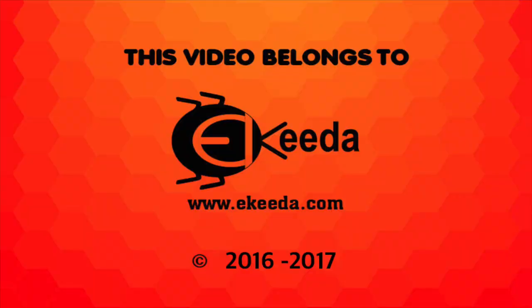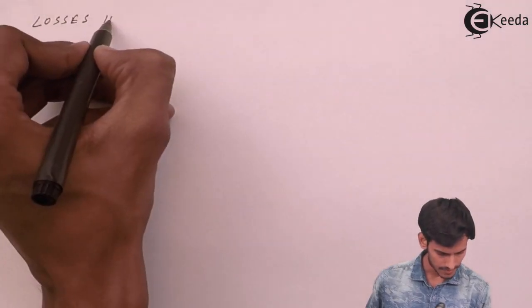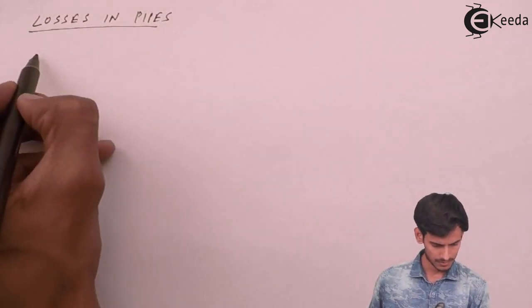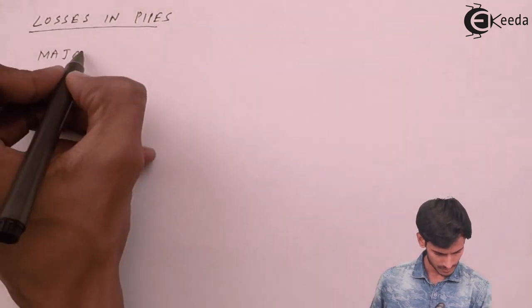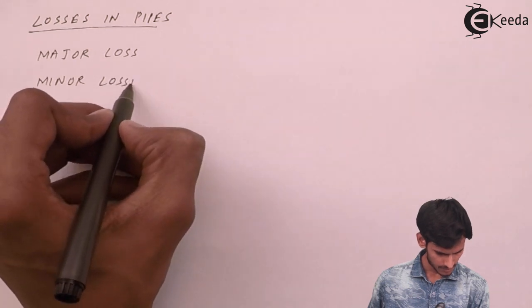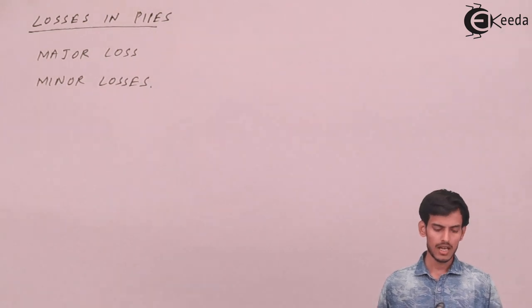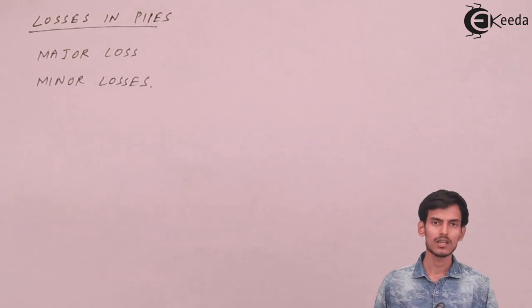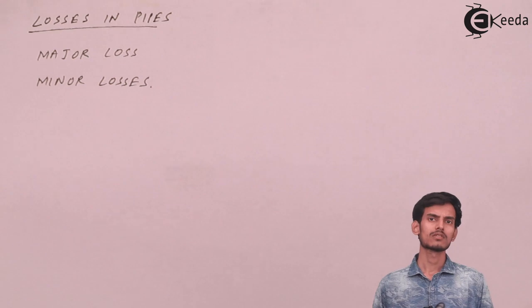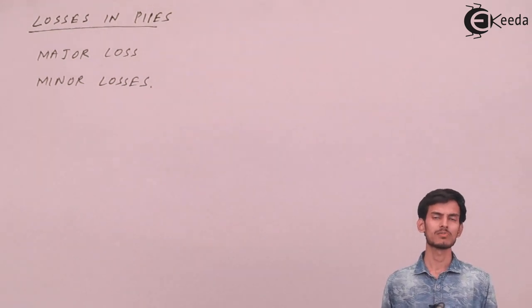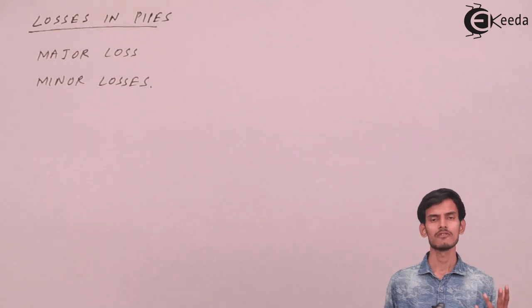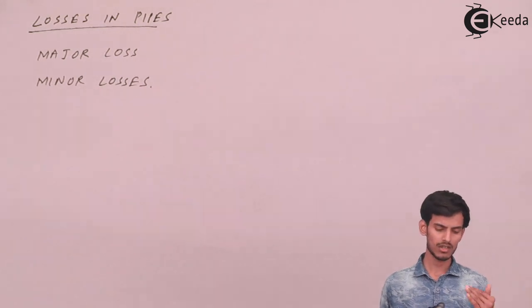Let's move on to the first topic: flow through pipes and their different losses. Losses in a pipe means loss of energy, and they are categorized into two types: major loss and minor losses. The major loss is loss due to friction — friction between the layers of fluid and also between the fluid and the surface of the pipe. It is a major part of the total losses.